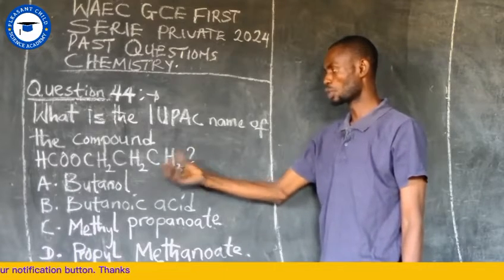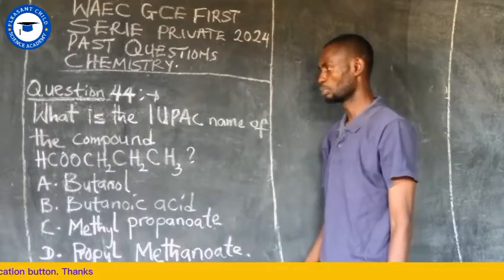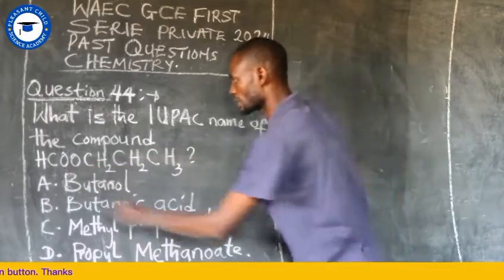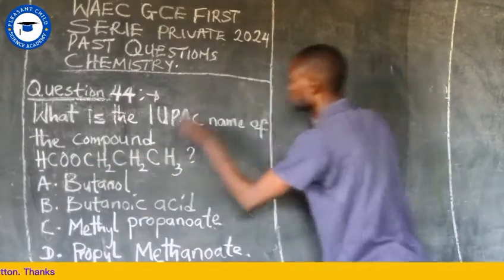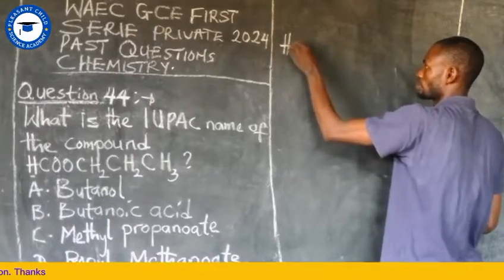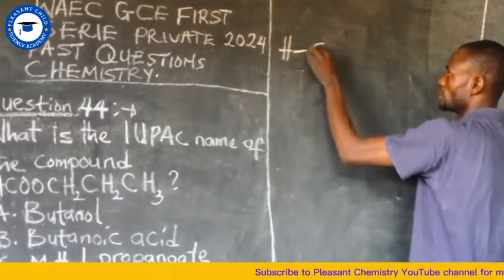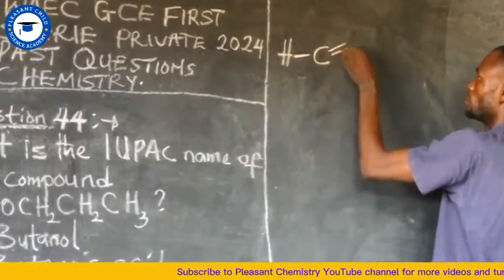Look at this, it starts from here. So we have H, bond C, double bond O.